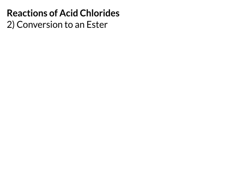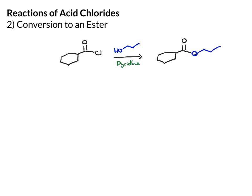You can do an identical reaction to convert an acid chloride to an ester. So instead of water, you would just add an alcohol. Let's say we wanted to make a particular ester — we would also add pyridine. What you end up with is the ester product. It's the same exact mechanism as reaction one; it's just that instead of water, we're using an alcohol.